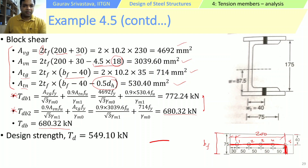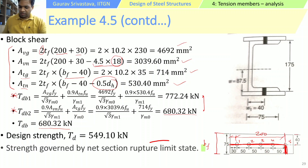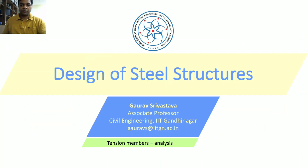In this case the net rupture strength governs, not the gross yield strength, giving an overall section strength of approximately 549 kN. This is how the effects of block shear can be considered alongside the other limit states. Thank you.